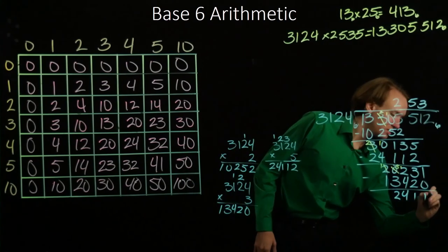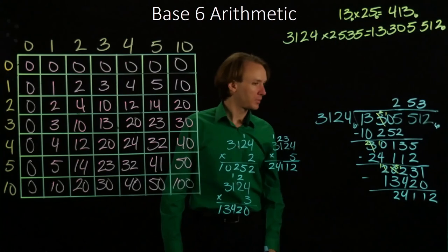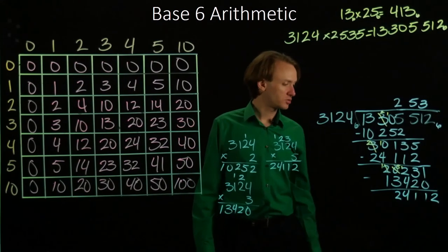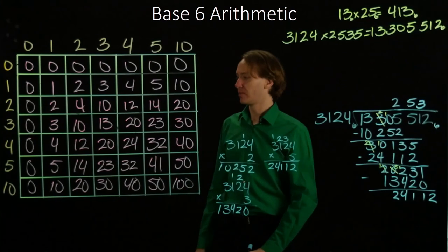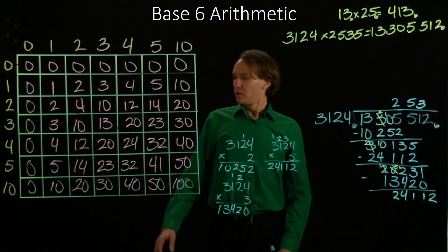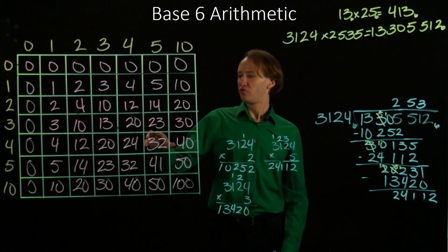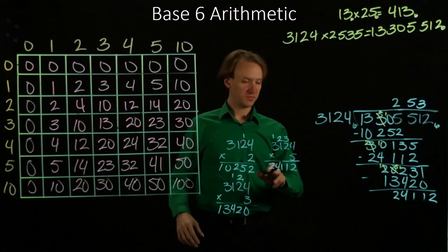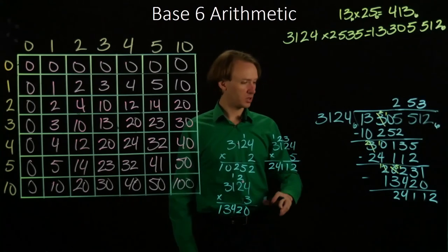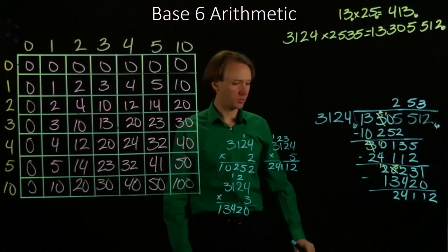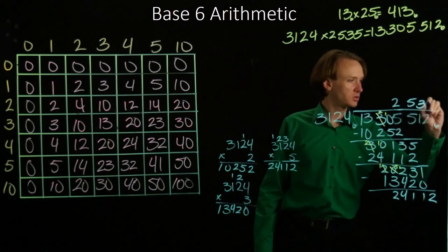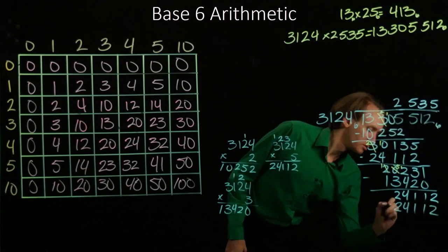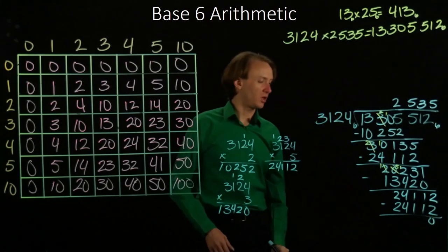Lastly, I'll bring down the 2. Now I want to find something to multiply 3124 by to get 24,112. So 5 seems like a decent choice. So I've already done 5, and 5 times 3124 is indeed 24,112. So I can do that. That leaves me with 0 left over.